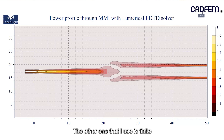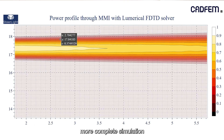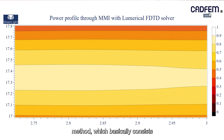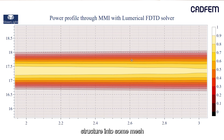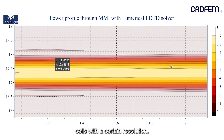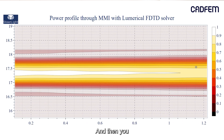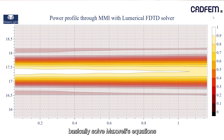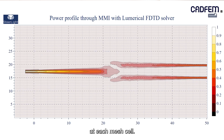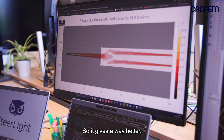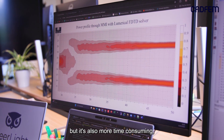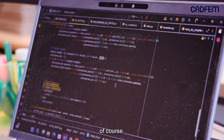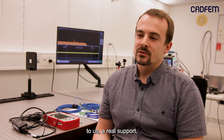The other method I use is Finite Difference Time Domain, which is a more complete simulation method. It consists of meshing a structure and discretizing it into mesh cells with a certain resolution, and then you solve Maxwell's equations at each mesh cell. This gives a way more accurate result, but it is also more time-consuming of course.